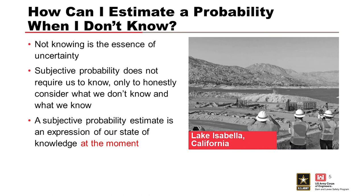How can you estimate a probability when you don't know? Not knowing is going to be the essence of uncertainty, and subjective probability doesn't require us to know. It only requires us to honestly consider what we don't know and what we do know. A subjective probability estimate is an expression of our state of knowledge at that moment. Anytime new information becomes available or our state of knowledge changes, our estimated risk might need to change as well.